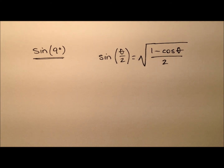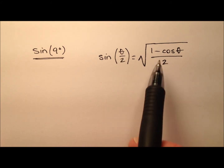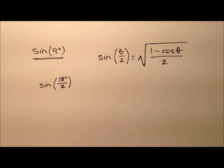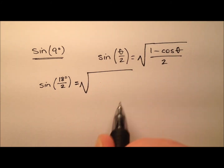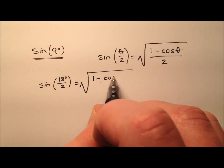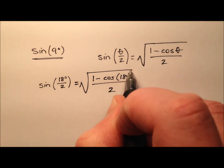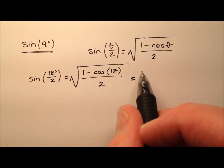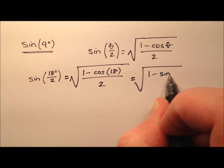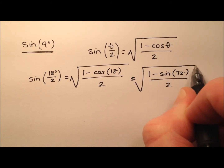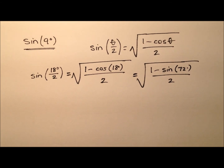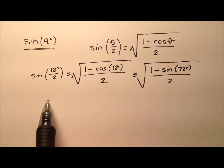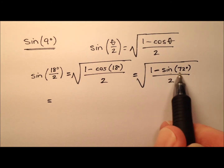For our second method of determining the exact value for the sine of 9 degrees, let's go ahead and use a half angle identity. This will be the sine of 18 degrees divided by 2, because half of 18 is our 9 degrees. Under the radical we have the expression 1 minus the cosine of 18 degrees, divided by 2. I'm going to change this to 1 minus the sine of 72, since 18 and 72 are complementary angles, and I've already made the video showing the exact value for the sine of 72 degrees. So we're just going to slip that value right into this radical.